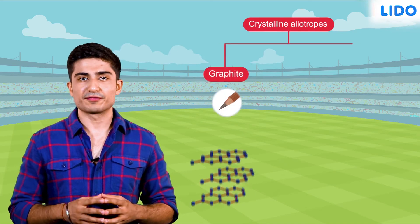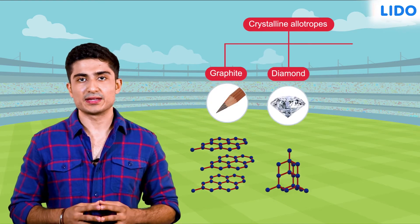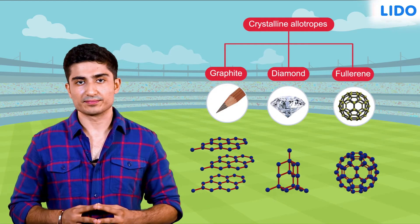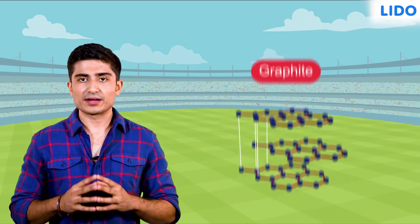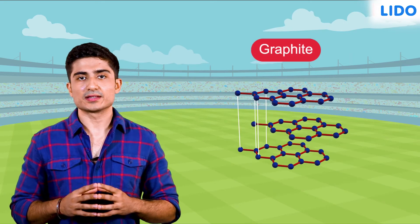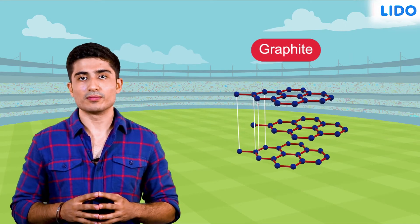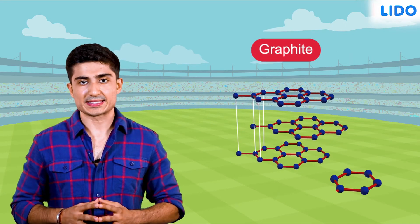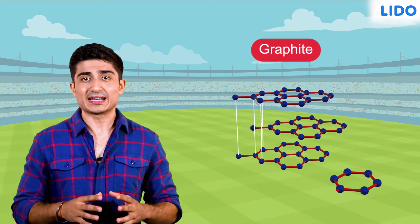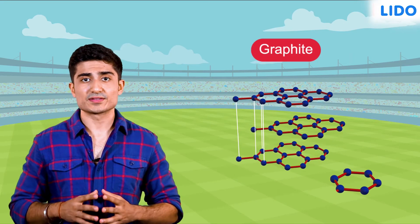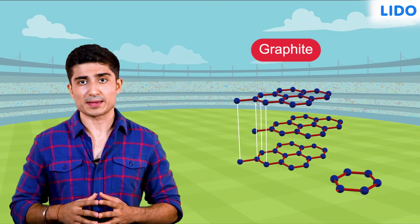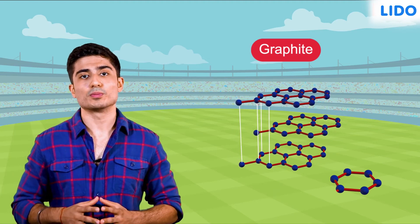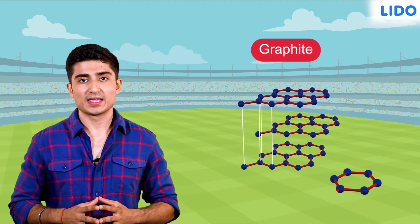Some examples are graphite, diamond, and fullerene. In graphite, the carbon atoms are arranged to form hexagons, and graphite has many layers of such hexagons piled one on top of the other.